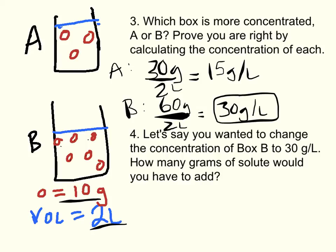Number four says, let's say you wanted to change the concentration of box B to 30 grams per liter. How many grams of solute would you have to add? This one's asking a different question.